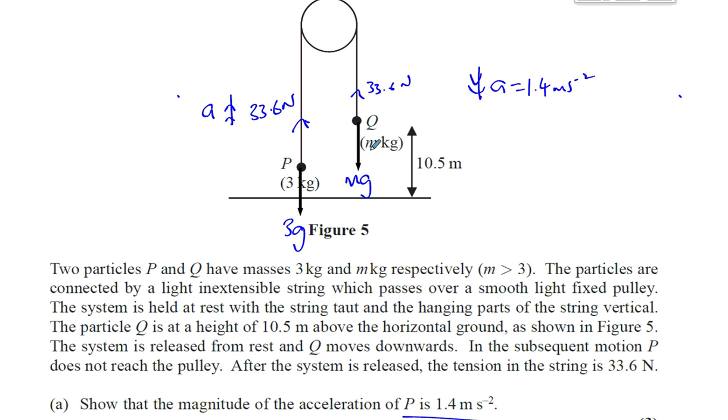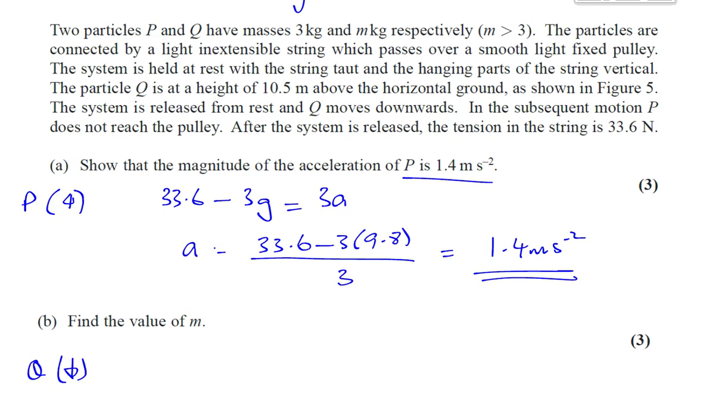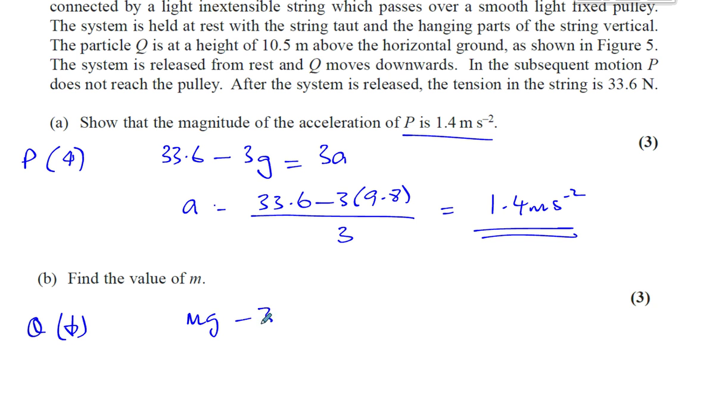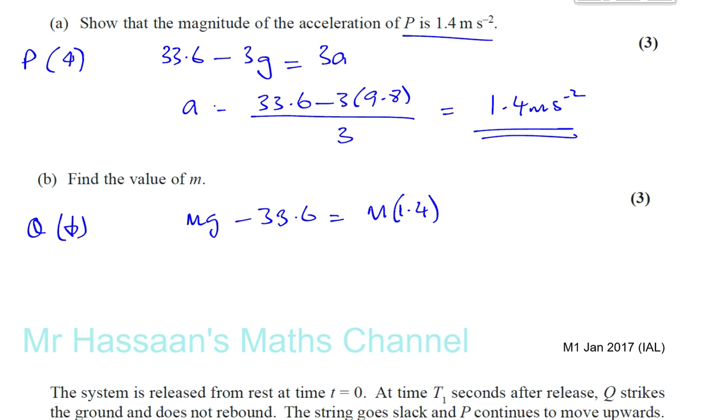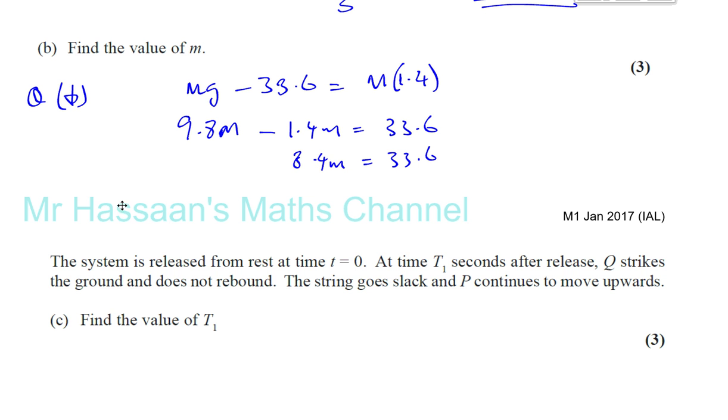Mg minus 33.6 equals MA. So you have Mg minus 33.6 equals M times 1.4. We can find what this is: 9.8M minus 1.4M equals 33.6. So 9.8 minus 1.4 is 8.4, so you have 8.4M equals 33.6.